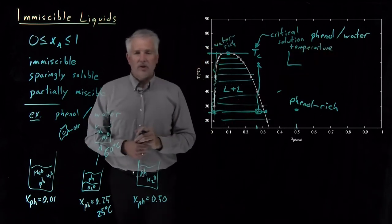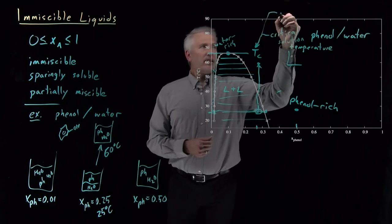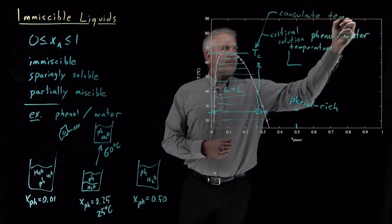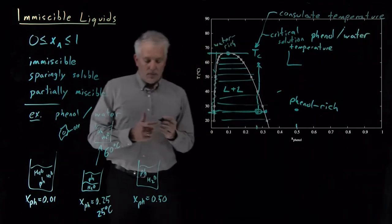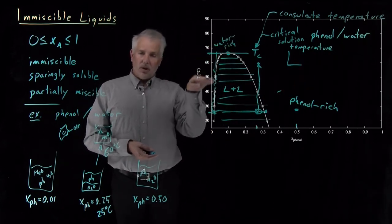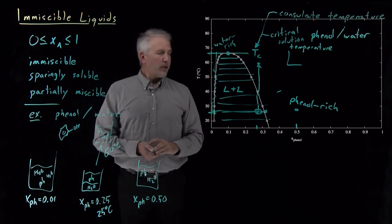We more specifically call it a critical solution temperature, or the other name that's sometimes given to that is a consulate temperature, somewhat fancier word to describe that critical point. But that consulate temperature or critical solution temperature tells us the temperature below which we may see phase separation, above which we'll never see phase separation between the two liquids.